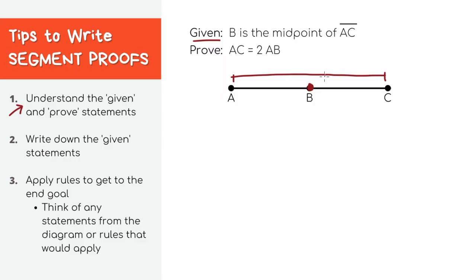In your head, you should already be thinking that this means the length of these two segments are equal. And it's asking us to prove the length of AC is two times the length of AB.